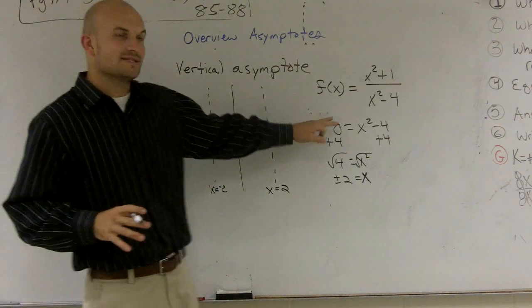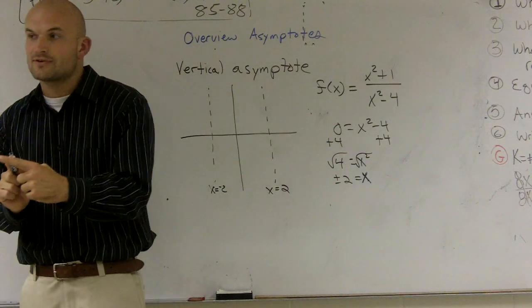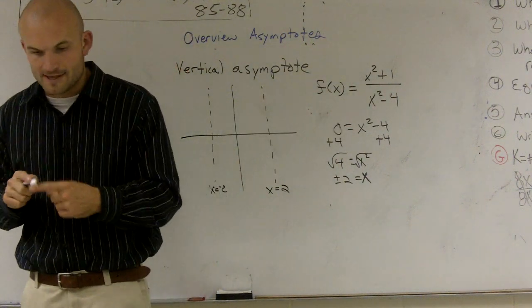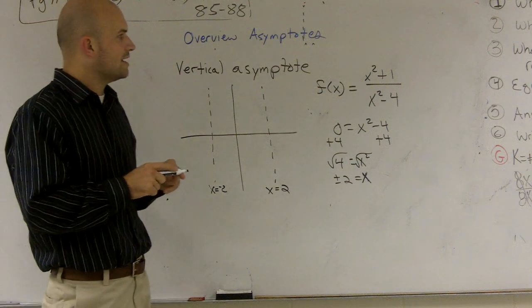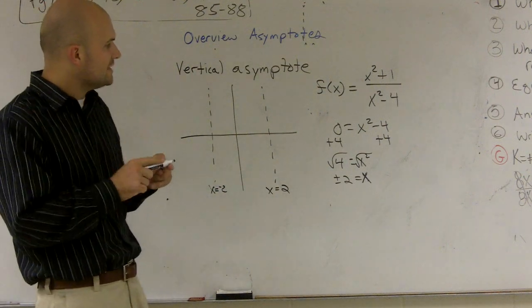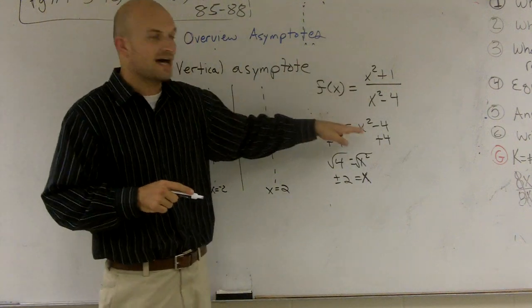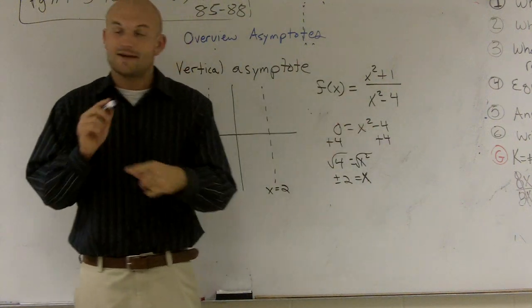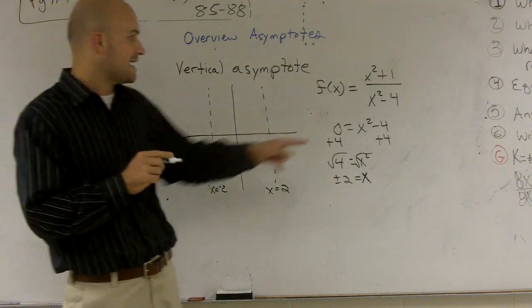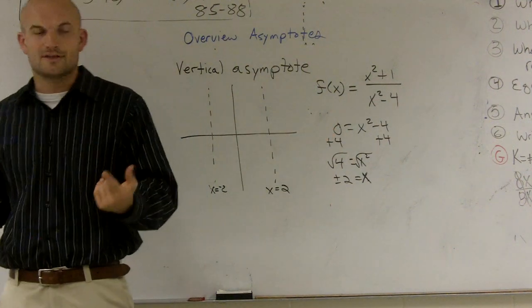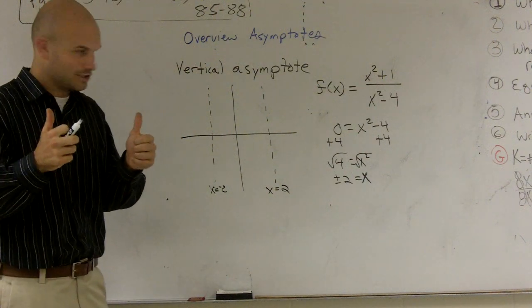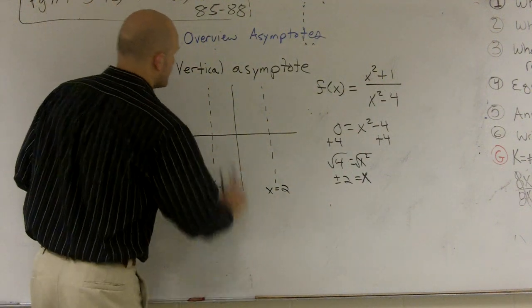To set it equal to 0, you might have to do factoring. You might have to solve, just like I did, and take the square root. You might have to even do the quadratic formula. But you need to make sure that you find the values of x that make it 0. And if there are no values of x, or if you have complex, like let's say you have a negative root, or you find a complex number, then there's no vertical asymptotes.